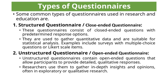Let me now discuss types of questionnaires. 1. Structured questionnaire (close-ended questionnaire) — these questionnaires consist of closed-ended questions with predetermined response options. They are used to gather quantitative data and are suitable for statistical analysis. Examples include surveys with multiple-choice questions or Likert-scale items. 2. Unstructured questionnaire (open-ended questionnaire) — these contain open-ended questions that allow participants to provide detailed, qualitative responses. Researchers use them to gather in-depth insights and opinions, often in exploratory or qualitative research.